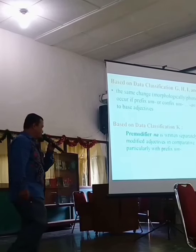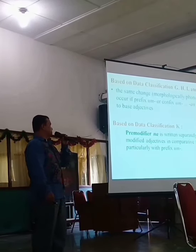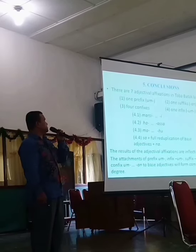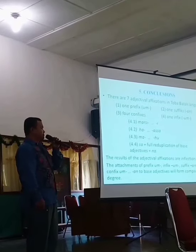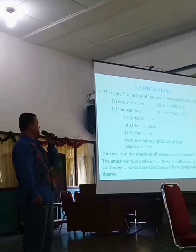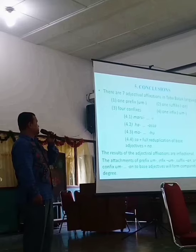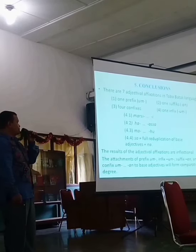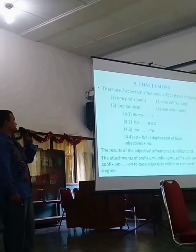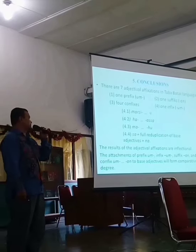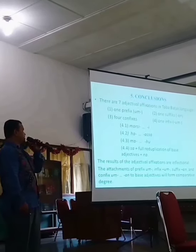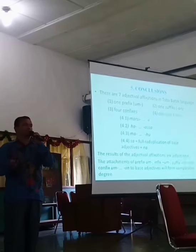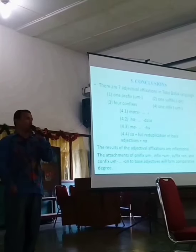The last finding is that the pre-modifier 'na' is written separately from the modified adjective in the comparative form using prefix 'um.' In conclusion, there are several base adjectives and affixed adjectives in Toba Batak language. First, I found one prefix: prefix 'um.' Two, one suffix: suffix 'an.' Three, four confixes: confix 'ma-si-i,' confix 'ha-asa,' confix 'ma-fu,' and 'sa' plus full reduplication of base adjectives. In the comparative form, there is one affix, which is prefix 'um.' The results of adjective affixation are inflectional, meaning there is no change of word class even if we attach confix, infix, prefix, or suffix to base adjectives — they still remain the same word class.